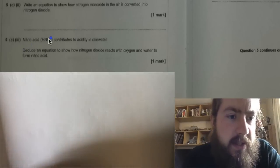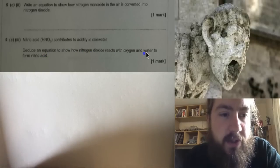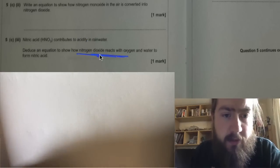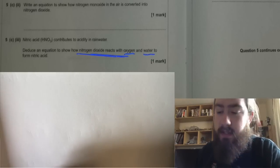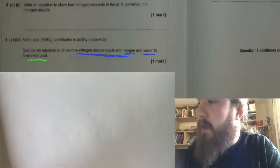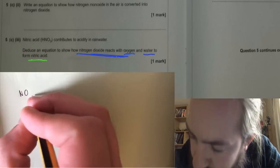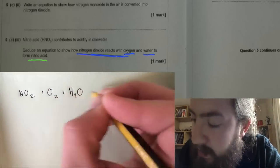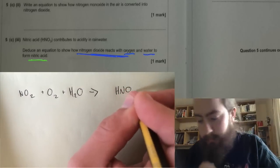5c part three. Nitric acid HNO3 contributes to the acidity in rainwater. Deduce an equation to show how nitrogen dioxide reacts with oxygen and water to form nitric acid. We need to have in our reactants nitrogen dioxide and oxygen and water, and in our products we've got to have nitric acid. So let's have a go at that: NO2 plus oxygen plus H2O forms HNO3.